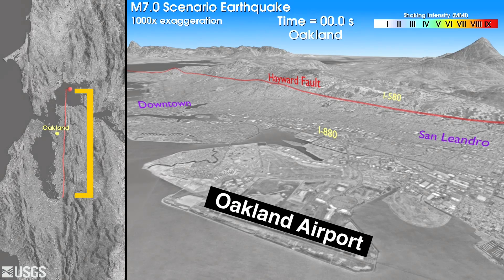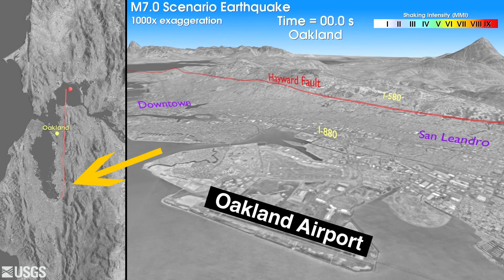The Hayward Fault is 50 miles long, extending from San Pablo Bay in the northwest down to Fremont in the southeast. The earthquake in this simulation will originate beneath San Pablo Bay.